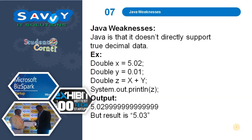Apart from these features, Java has one disadvantage: Java does not directly support true decimal values. For example, if double x = 5.02 and double y = 0.01, when we sum them, it prints 5.0239999... instead of the expected result 5.03. Thank you.